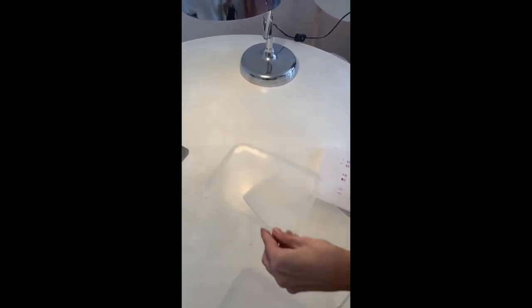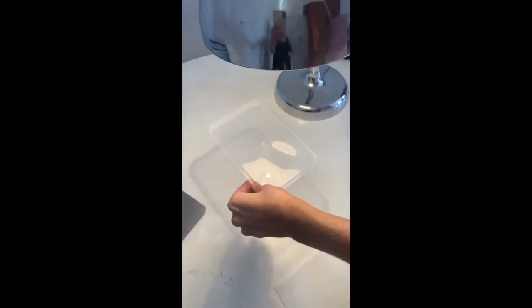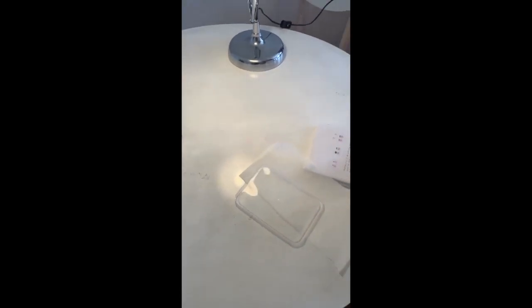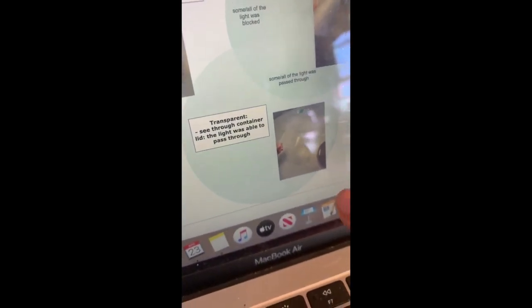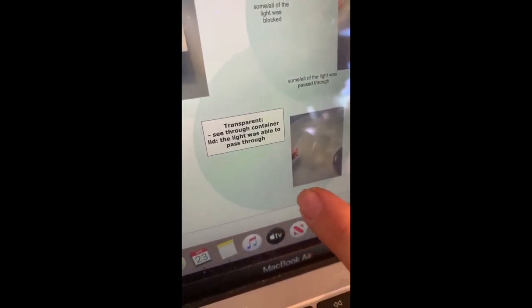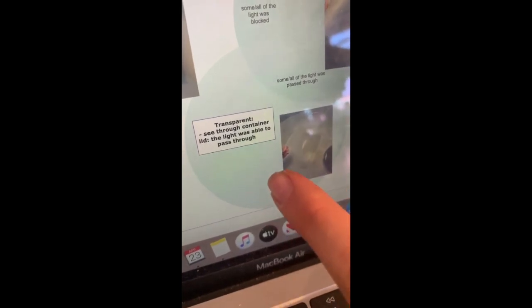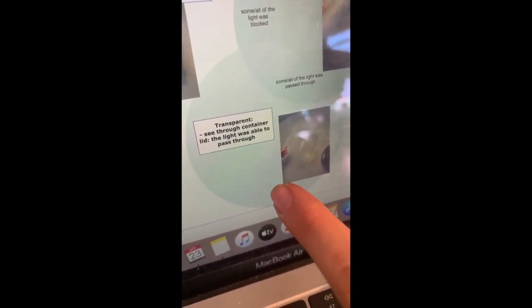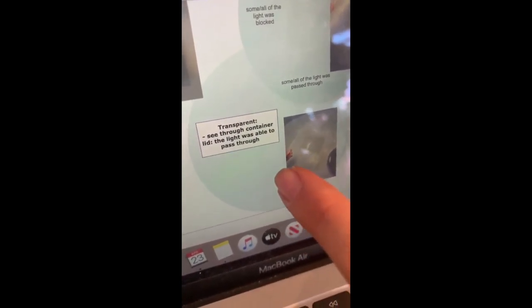Let's begin the experiment. Place the see-through container lid underneath the lamp. What do you see? Side note, students will take a photo and upload it to smart draw. For the purpose of this assignment I have already uploaded it. As you can see, a student would upload a photo and write a description. In this case, the student should write, transparent, the see-through container lid. The light was able to pass through.